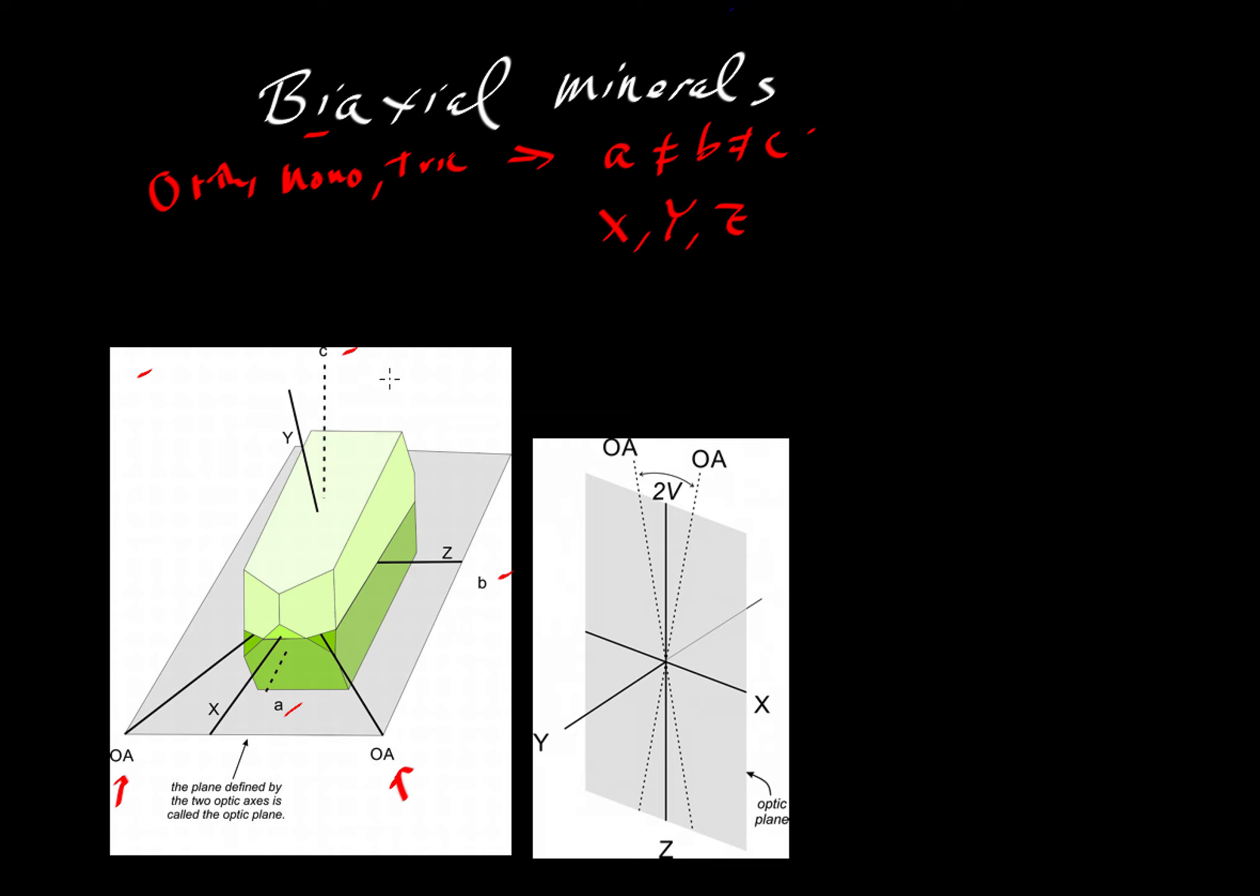As shown here, this is a case for this particular diagram of a monoclinic crystal. So for the orthorhombic case, X can be parallel to A, B, or C, but we never know which one.